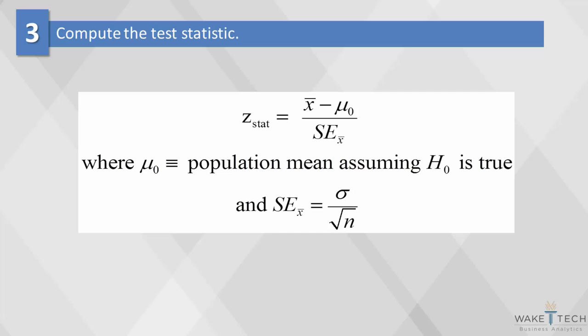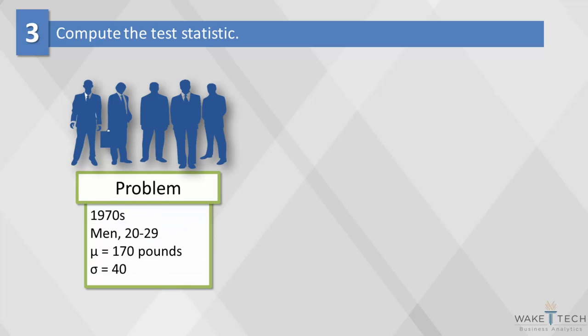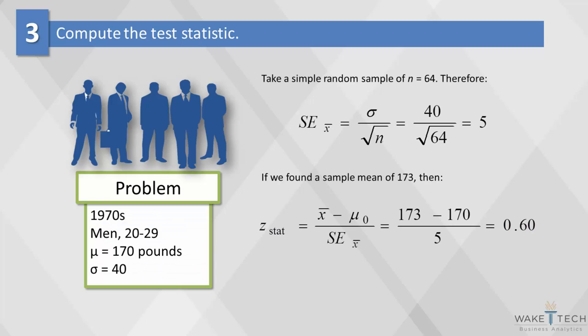In our male weights example, we're going to use the z statistic because we know the population mean and the population standard deviation. To compute the z statistic, we simply insert values derived from our sample into the formula. If in one sample we found that the sample mean was 173, then the z statistic would be .60. Think of this value on the x-axis under a standard normal curve.